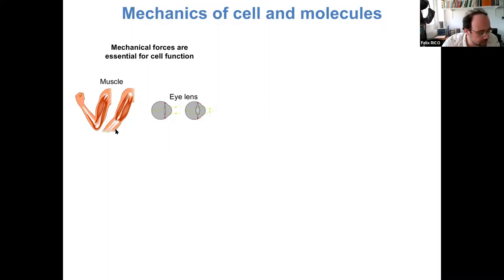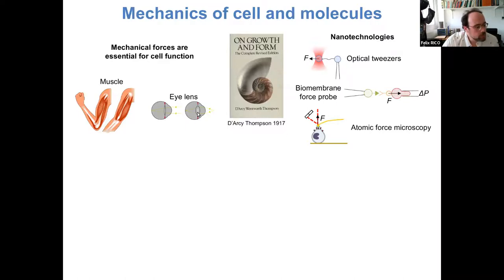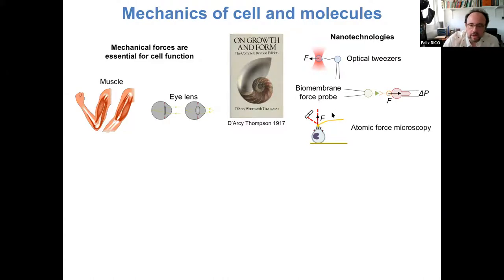Muscle is made to generate mechanical force, but in other tissues like the lens of the eye — which allows us to focus from far and near — a certain flexibility of the tissue is also important for function. This was known long ago by pioneers in the field, but the development of nanotechnologies like optical tweezers or the biomembrane force probe boosted the field.